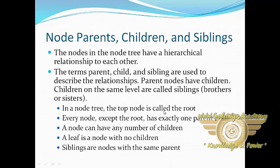In a node tree, the top node is called the root. Every node except the root has exactly one parent node. A node can have any number of children. A leaf node is a node with no children. Siblings are nodes with the same parent. So this is about parents, children, and siblings.